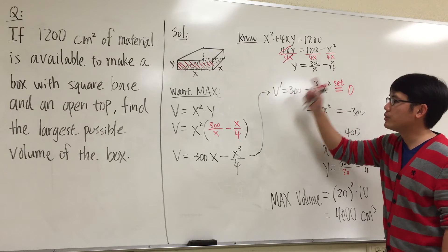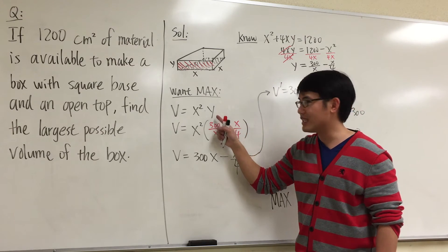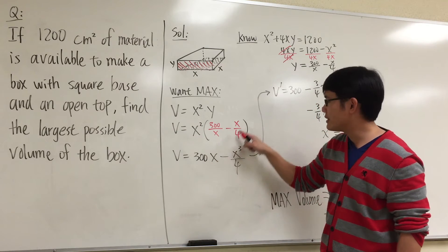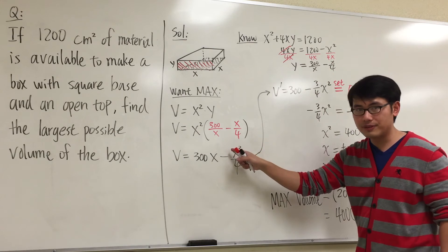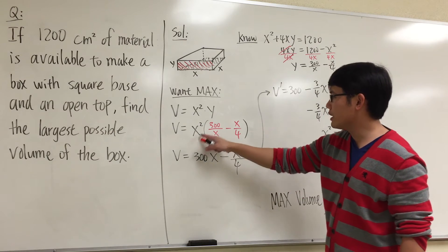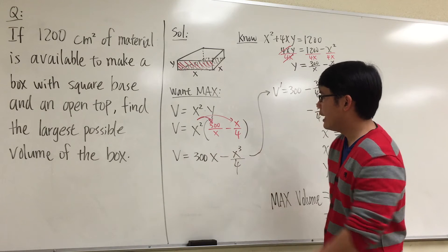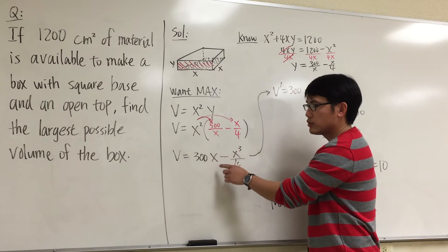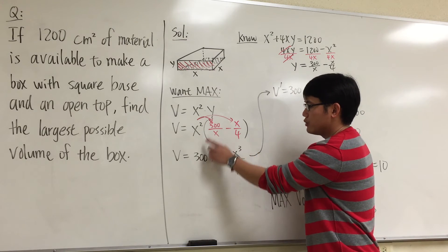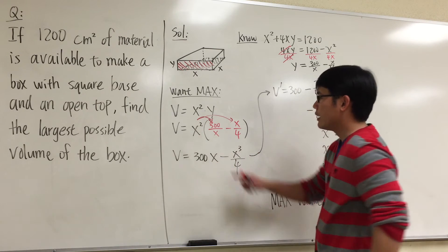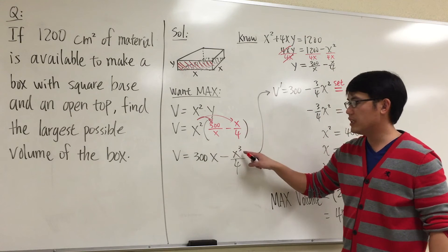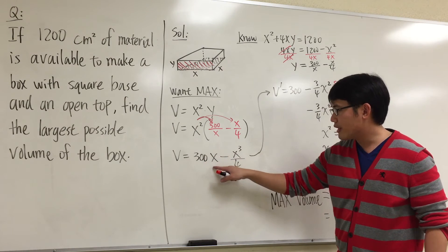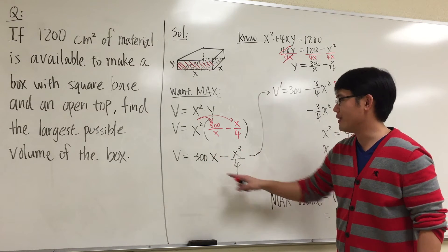And I can plug this into this y. So now the equation becomes V = x²(300/x - x/4). I just do the substitutions. And of course, we can distribute the x² into the parentheses. The x² times the x on the denominator, one of the x cancels out, but we still have 300 on the top and then one of the x. And x² times this x gives us x³. Don't forget we still have the minus. So we have a total of 300x - x³/4 for the volume now.